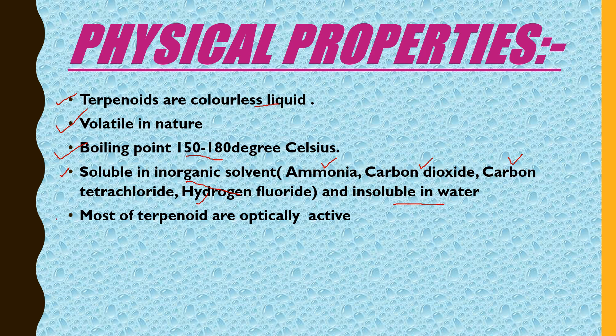The next physical property is that most terpenoids are optically active. This means that when plane-polarized light is passed through terpenoids, the light is rotated either to the left or to the right. If it rotates to the right, it is called dextrorotatory; if it rotates to the left, it is called levorotatory.